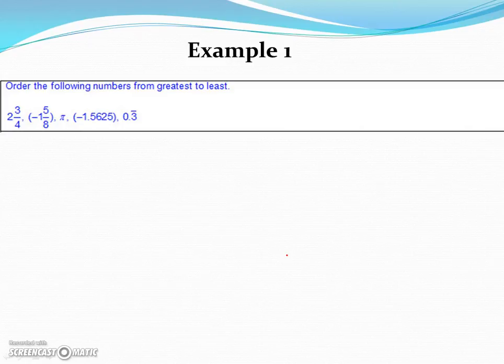Let's work out a couple examples of what we'd be expected to do under this lesson objective. This first one says order the following numbers from greatest to least. It's important we identify exactly what it's asking us to do. We want to go from greatest to least. Now in order to do that, it's going to help if we can get these all in the same form, whether we do fractions or percents or decimals. I'm going to choose to do decimals here.